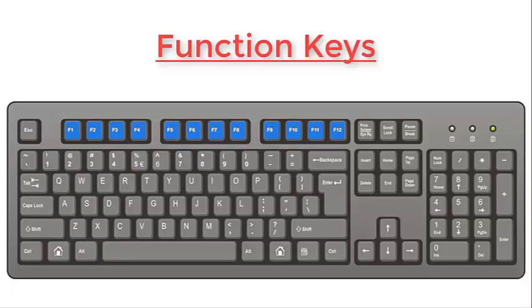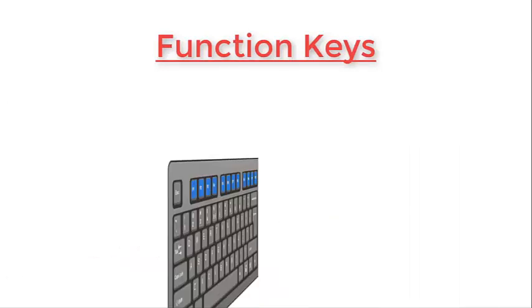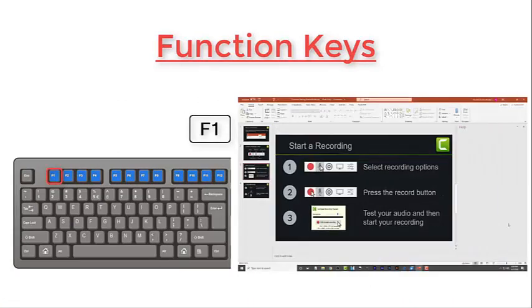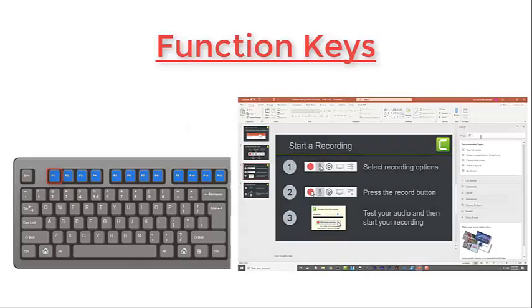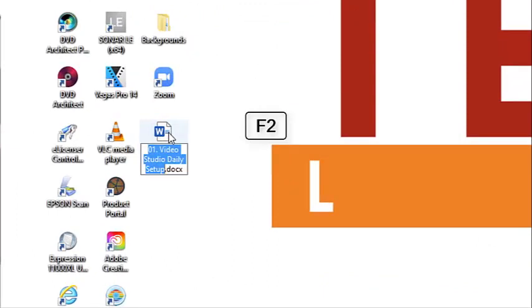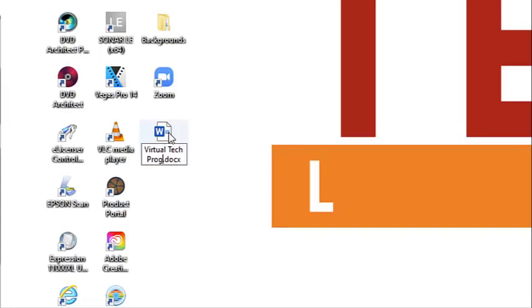The function keys on your keyboard may perform different tasks than what we're going over today. F1 is used to open a help screen in just about every program. When pressing F2, you can rename a highlighted icon, file, or folder on your Windows desktop. We will be discussing icons, files, and folders in the next section.